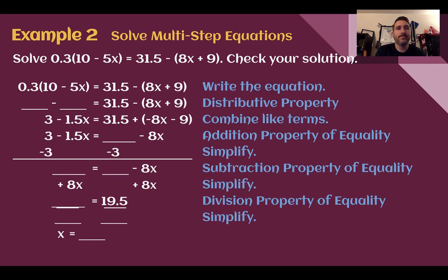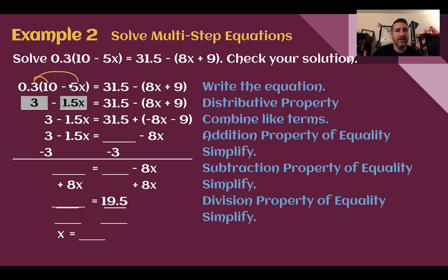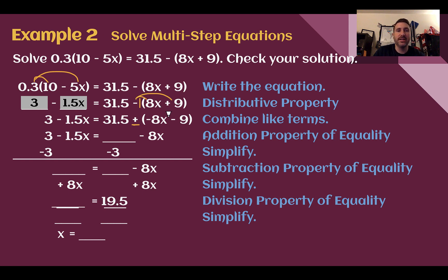Example 2, solve multi-step equations. Solve 3 tenths times the quantity 10 minus 5x, equals 31 and a half minus the quantity 8x plus 9. Just as before, we're going to use the distributive property to get rid of our parentheses. 3 tenths times 10 is 3. 3 tenths times 5 ends up being 1.5 — and it was subtracting. On the right side, we take the negative — which is really a negative 1 — and distribute it to both terms, giving us negative 8x and minus 9. If you see a negative out front with no number, you're just changing the signs of both things inside the parentheses.